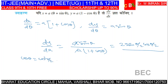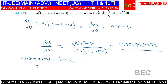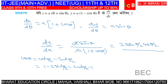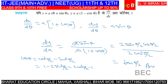cos θ can be written as cos²(θ/2) − sin²(θ/2), and using identities: 1 + cos θ = 2·cos²(θ/2). Substituting, we get sin θ = 2·sin(θ/2)·cos(θ/2). After simplification, 2 cancels with 2, cos cancels with cos, leaving sin(θ/2)/cos(θ/2) = tan(θ/2). That is our final answer.